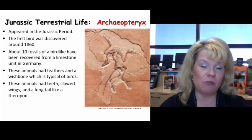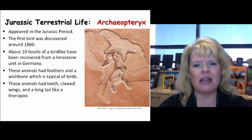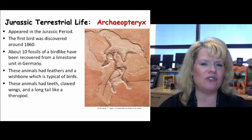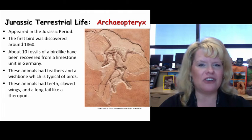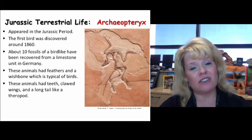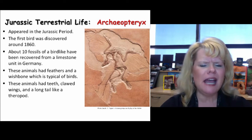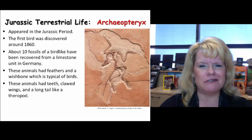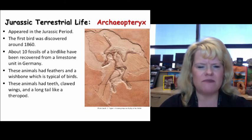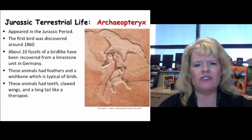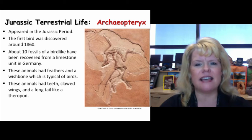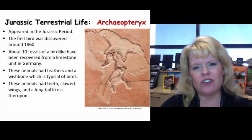Archaeopteryx shares both reptilian and avian characteristics. Most importantly it has feathers, and it also has fused clavicles. But it retains reptilian features such as sharp teeth, the S-like neck characteristic of theropods, a long tail that birds don't have today, and clawed wings. It clearly was a bird. The first specimen was discovered in 1860, and most fossils have been found in a central location in Germany. Archaeopteryx represents the evolution of birds joining flying reptiles and insects in the air.